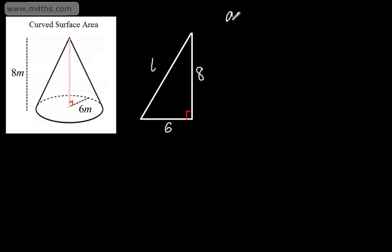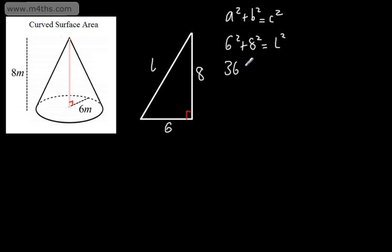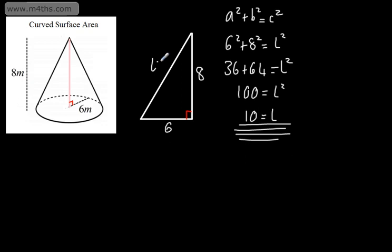Using Pythagoras' theorem, a squared plus b squared is equal to c squared — the sum of the squares of the two shorter sides is equal to the square of the longer side. So 6 squared plus 8 squared is equal to l squared. If you've already spotted that this is a 6-8-10 Pythagorean triple, that's perfectly fine. That gives us 100 equals l squared, so l is the positive square root of 100, giving us l equals 10.